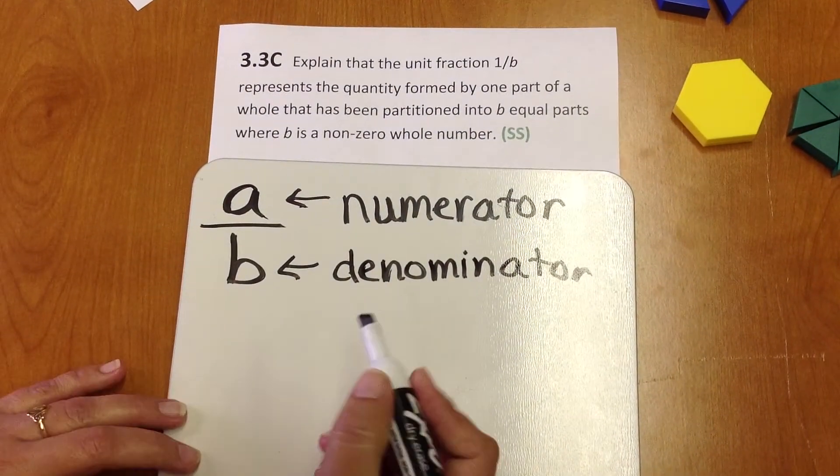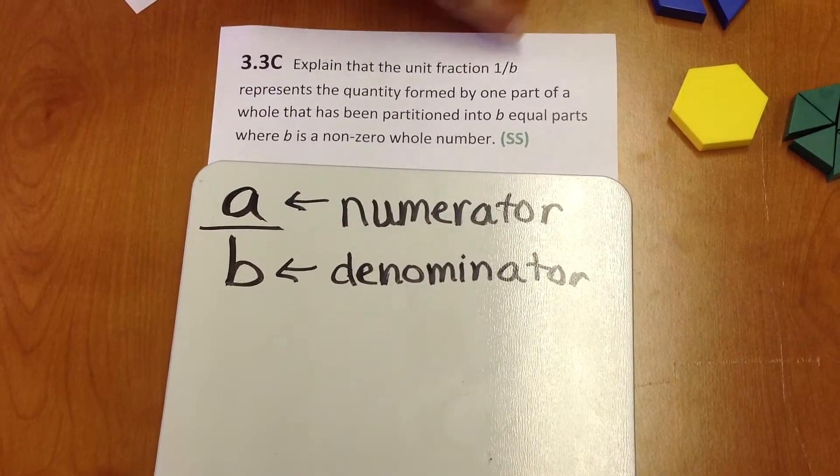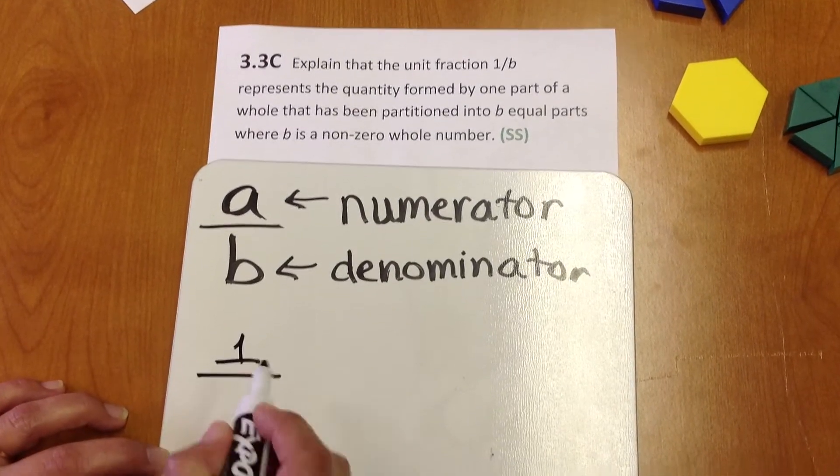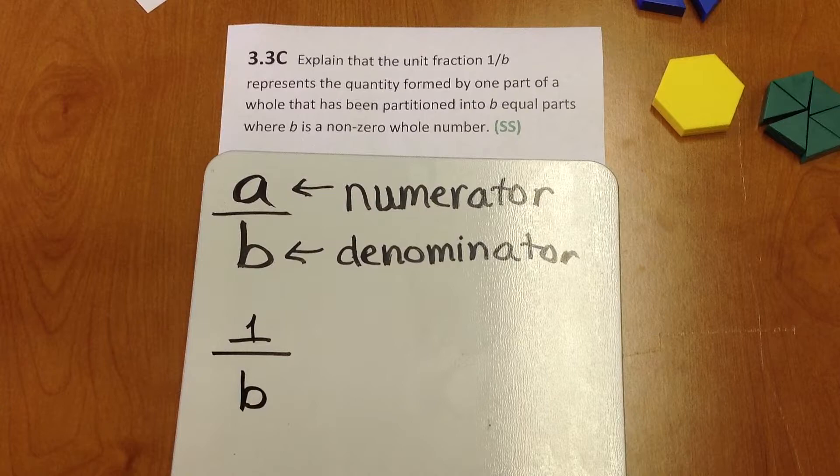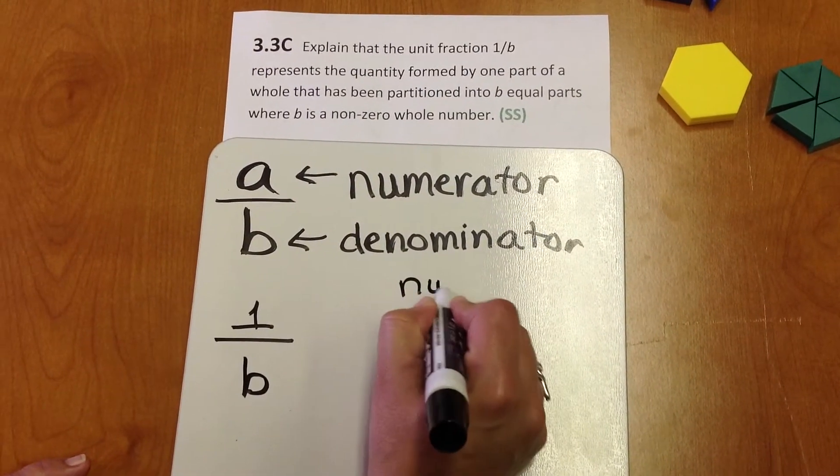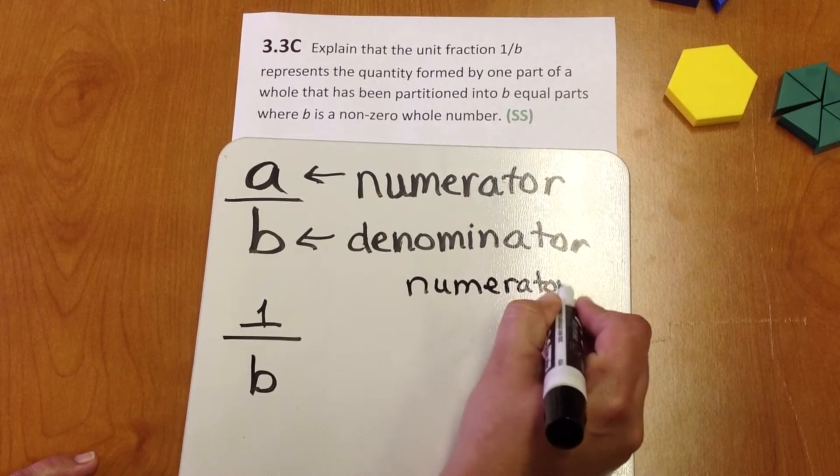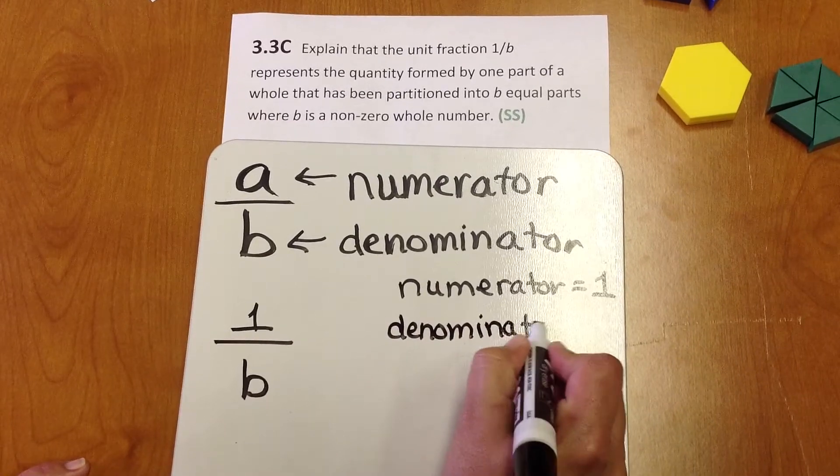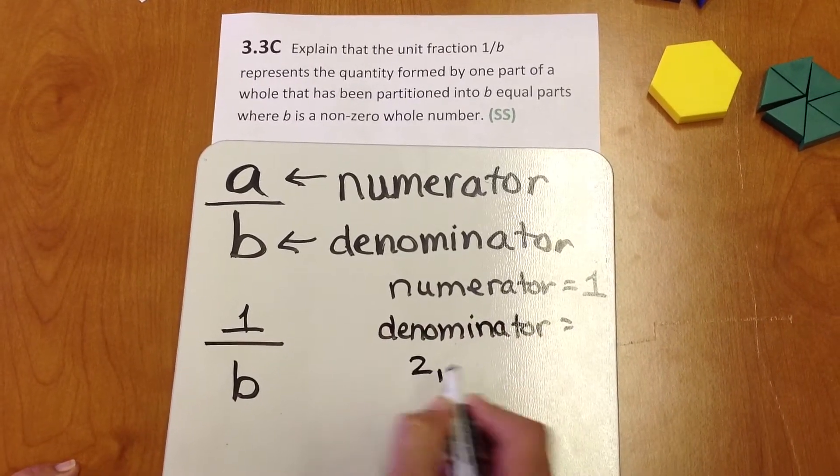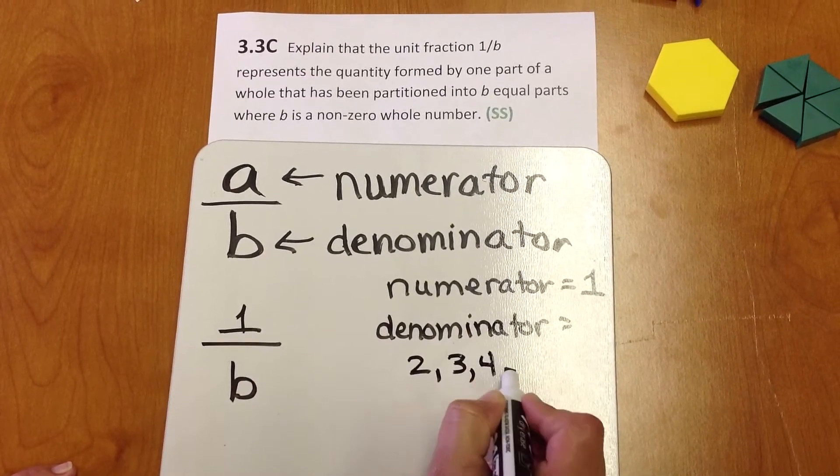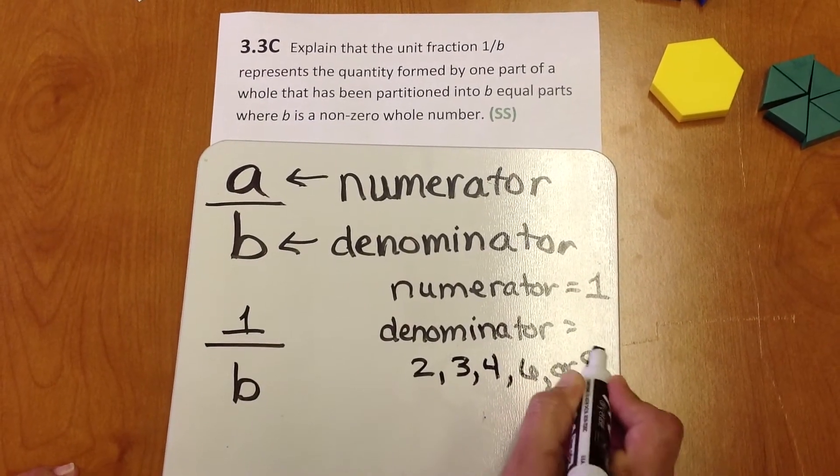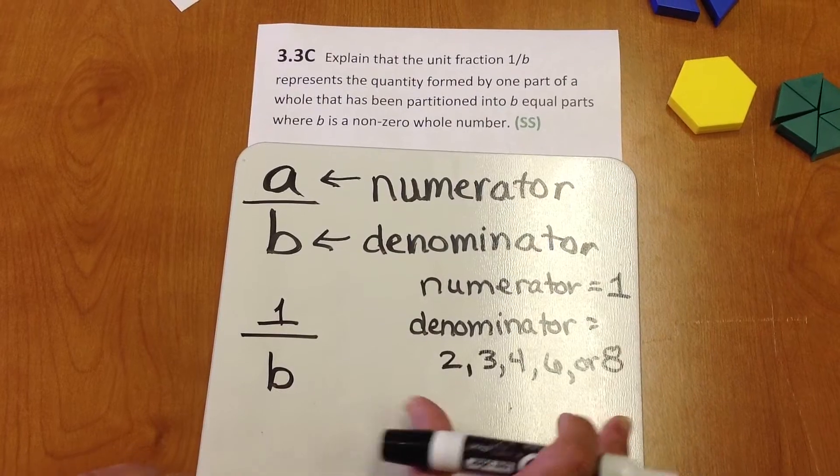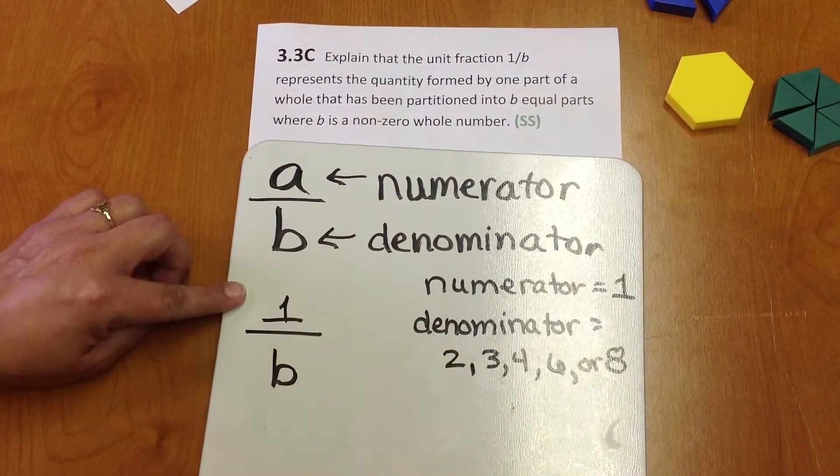For this standard, our numerator is always going to be 1. Our denominator can be either 2, 3, 4, 6, or 8. And we know that from previous third grade standards. So this is just a reminder. Denominators are going to be one of these values. For this standard, numerator must be 1.